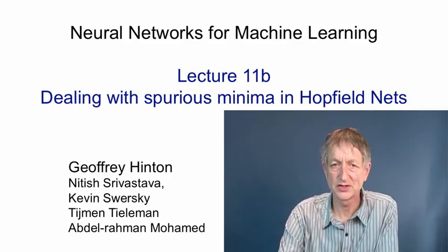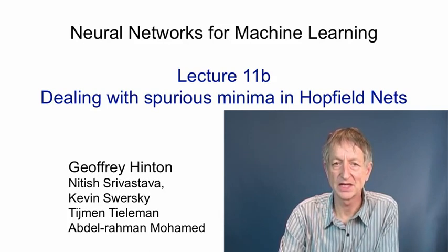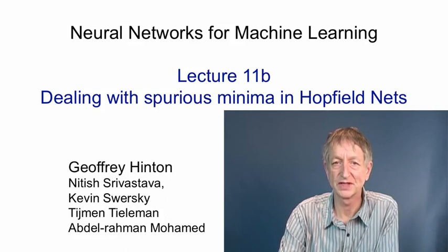In this video I'm going to talk about the storage capacity of Hopfield nets. Their ability to store a lot of memories is limited by what are called spurious memories. These occur when two nearby energy minima combine to make a new minimum in the wrong place. Attempts to remove these spurious minima eventually led to a very interesting way of doing learning in things considerably more complicated than a basic Hopfield net. At the end of the video I'll also talk about a curious historical rediscovery where the physicists trying to increase the capacity of Hopfield nets rediscovered the perceptron convergence procedure.